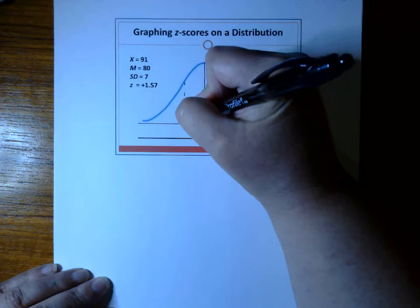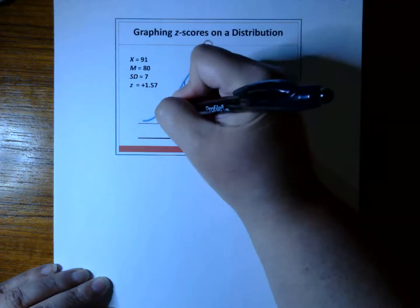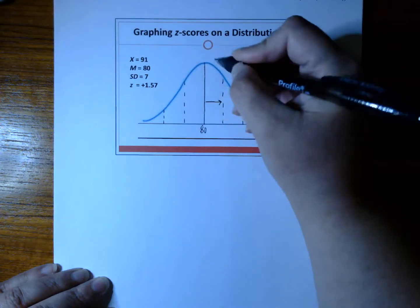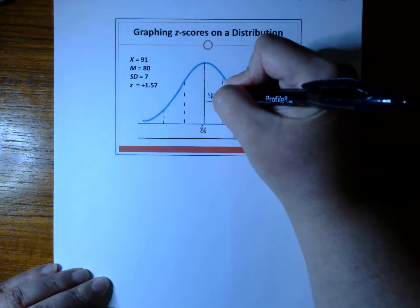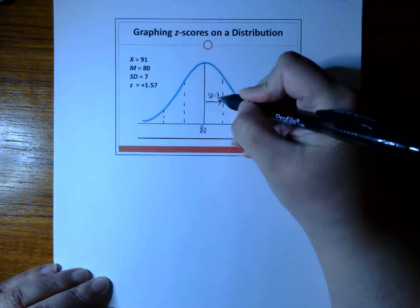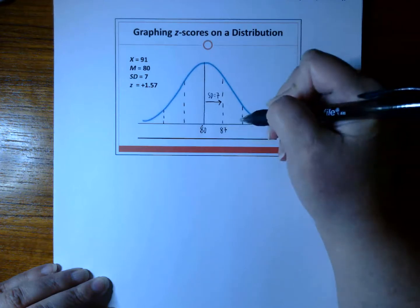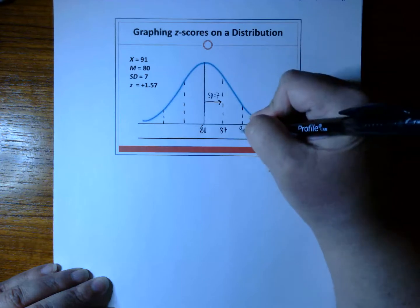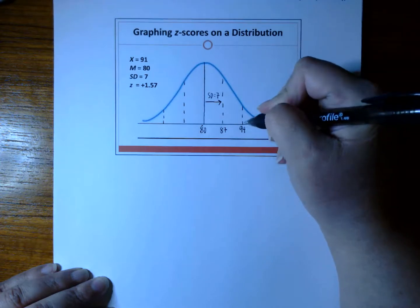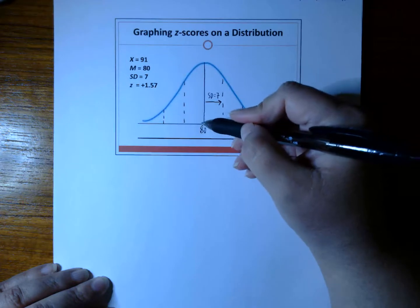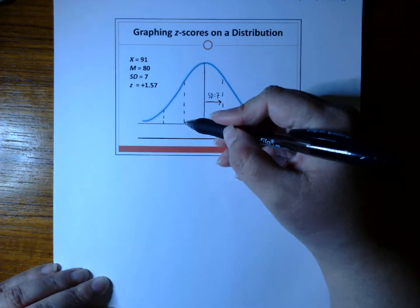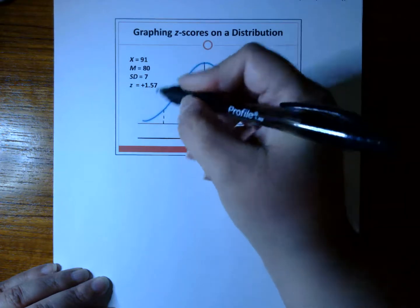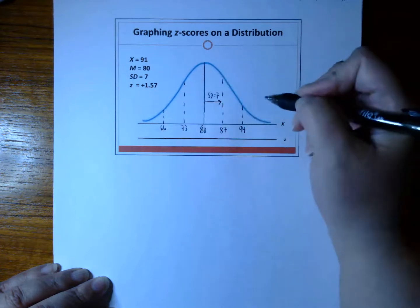This is one standard deviation below the mean, and this is two standard deviations below the mean. If this is one standard deviation, we would write SD equals 7. And 80 plus 7 gives us 87. If we do two standard deviations, this X-score would be a 94. If you're going below the mean, 80 minus 7 gives us 73. And then if we go one more standard deviation, it would be 66.